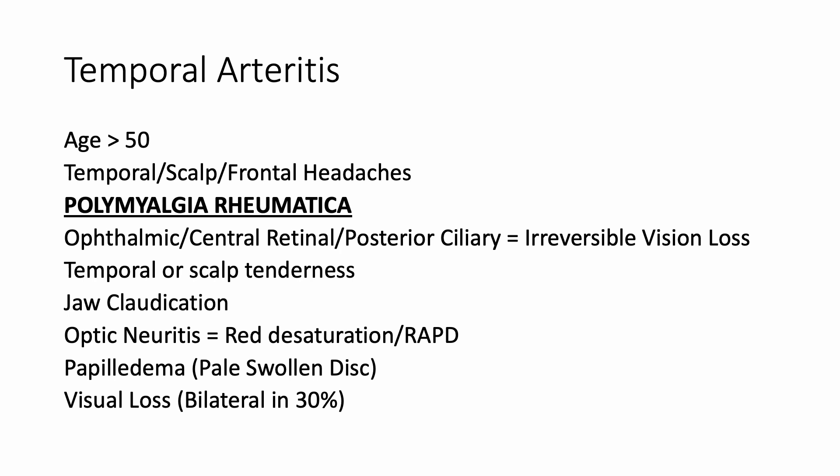They may present with temporal headaches, scalp headaches, or frontal headaches. There may be jaw claudication, and tenderness on the temporal or scalp area. There is a very strong association with polymyalgia rheumatica, which presents with malaise, bilateral shoulder pain, and joint pains. If the ophthalmic artery, central retinal artery, or posterior ciliary artery becomes involved, it may lead to irreversible vision loss — so we need to act immediately on these patients.